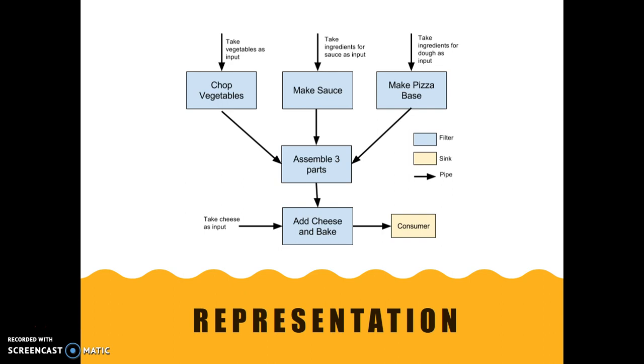How does this work? We implement the first few filters to process the raw ingredients to create the basic elements for the pizza: the vegetables, the sauce, and the pizza base or the dough. When all three of these have been completed, we can assemble them. After it has been assembled, we can then add the cheese to the pizza and bake it, and then deliver it to our customer, which is represented by a pink box or the sink.